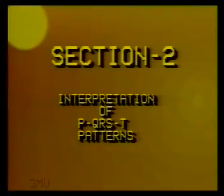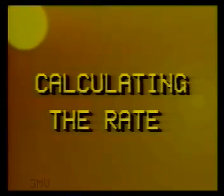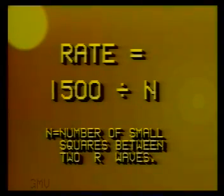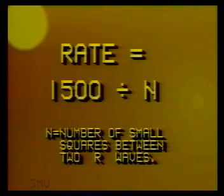We now come to the second section on interpretation of PQRST patterns: calculation of the heart rate. The heart rate is calculated by measuring the number of small squares between two successive R waves. 1500 divided by this number gives us the heart rate per minute.